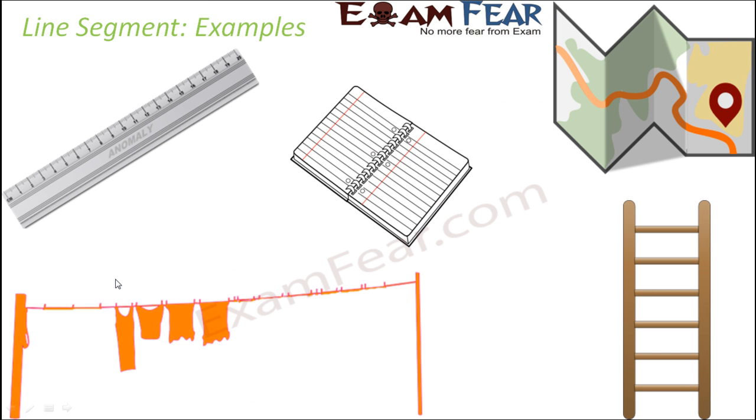Now some of the examples from our day to day life could be a ruler. So when you look at a ruler, an edge of the ruler is nothing but a line segment because it has a fixed length, because it has fixed end points. When you look at the lines in your notebooks, they are also line segments.